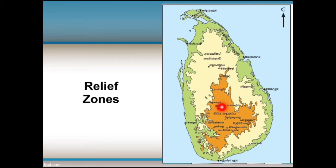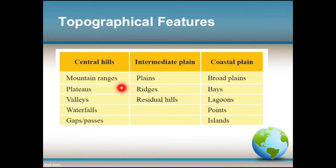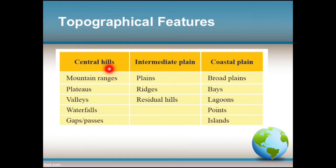This orange-colored area is the central hills. This yellow-colored area shows the intermediate plains. This green-colored area shows the coastal plains. Mountain ranges, plateaus, valleys, waterfalls, and gaps are the relief features in the central hills.